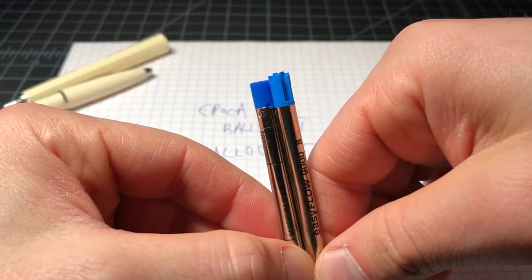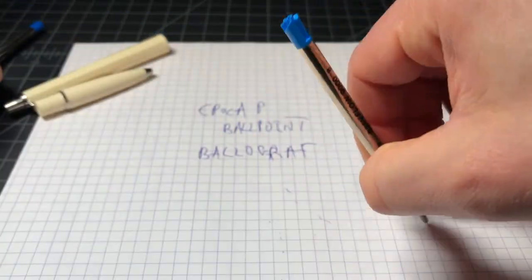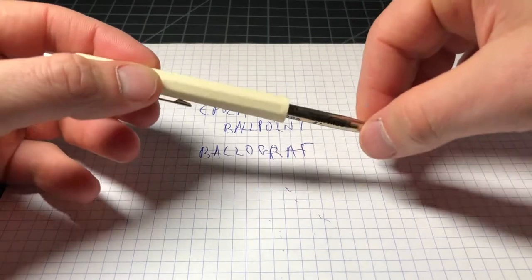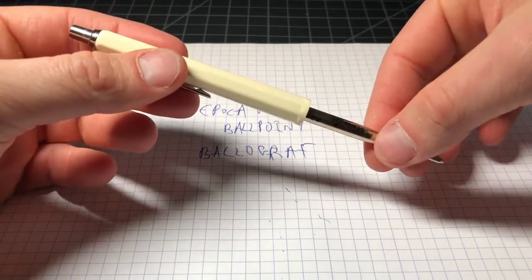But, it actually ends up sticking out way more than that, which means the Parker-style cartridge, in this case the Schmidt, is not inserting as much as it should.